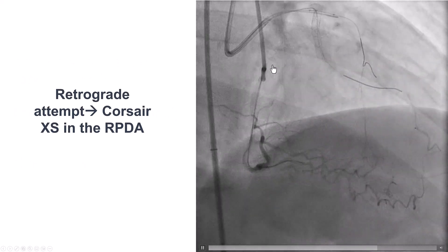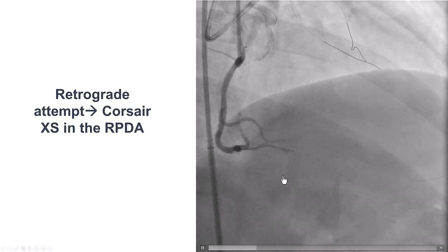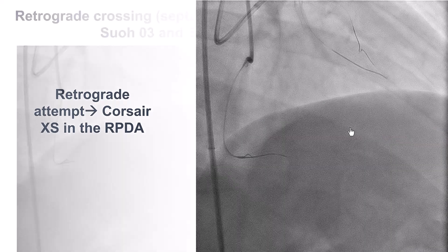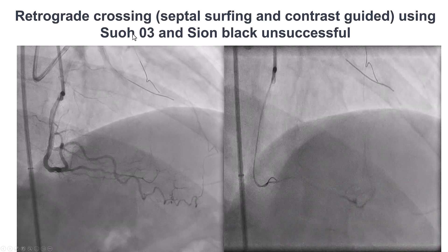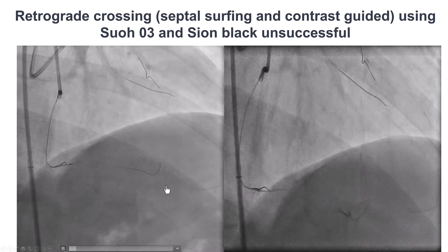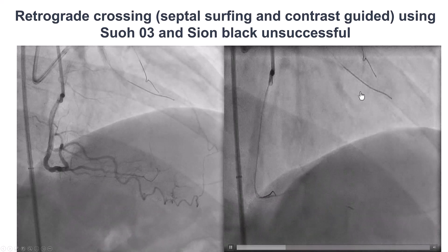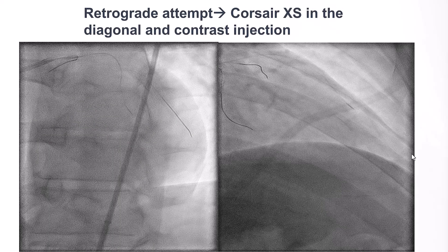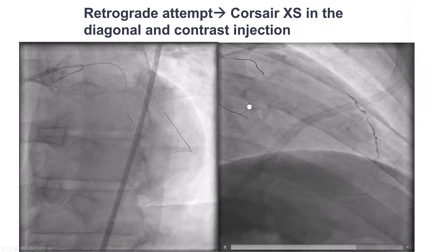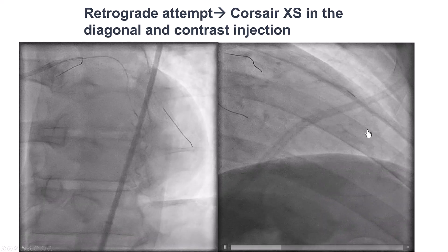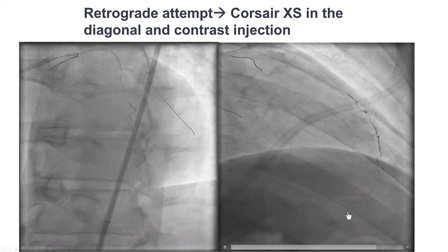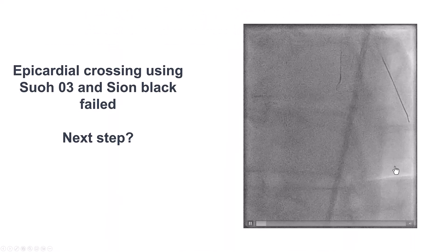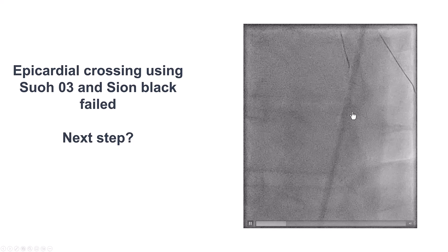We left a balloon inflated for a few minutes and then tried to go retrograde through the PDA via a septal collateral. Despite multiple guide wires including SUO3 and Xeon Black, we were unable to enter that septal branch and wire to the LAD. We then debated ADR versus retrograde through the epicardial collateral. Given the area of staining, we gave a brief attempt to the epicardial, but there was too much tortuosity and the vessel was too small, so we decided not to pursue further.